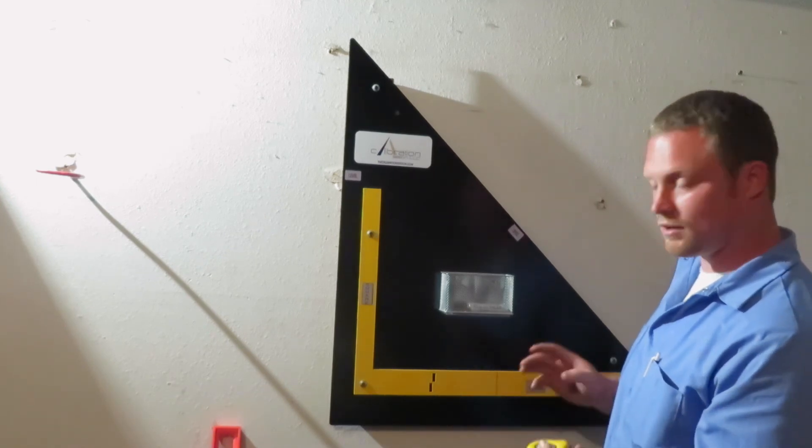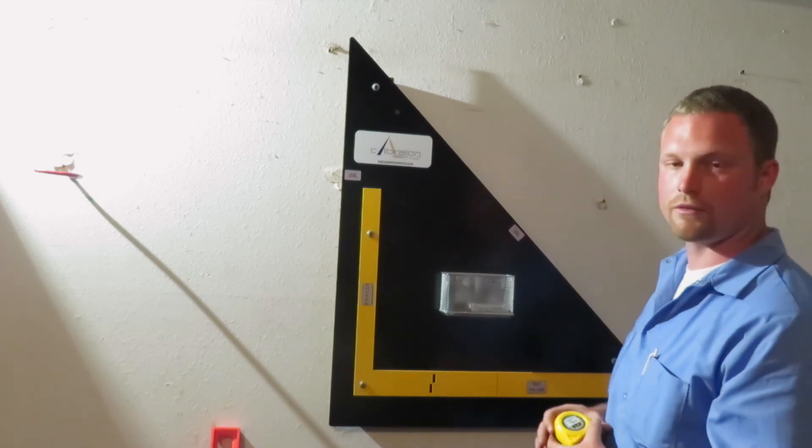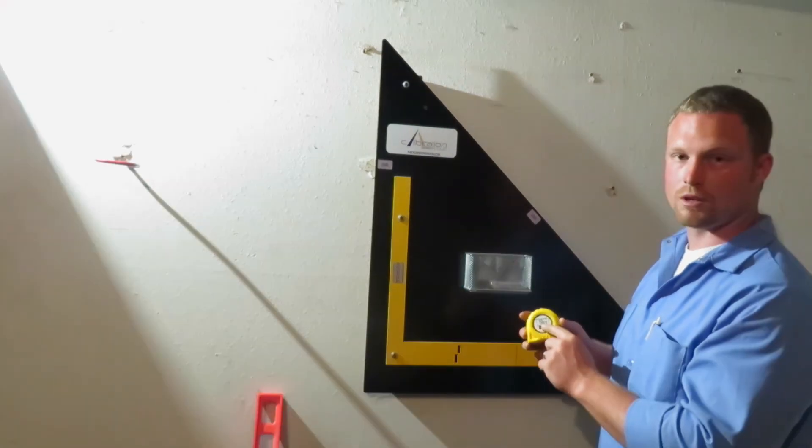Once you verify that it is calibrated and that it's within spec, you'll take a label out of the basket just like this one here, you'll place it on the tape measure, and that's it. You're done.